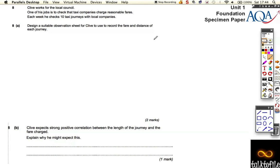So we've got a question about Clive now, and he's working for the local council, and he wants to check the cost of some taxi journeys to make sure that they charge a reasonable amount. Now, it asks for a suitable observation sheet. It's not actually very hard to get these marks, but you have to understand what an observation sheet is. It's basically a piece of paper which you've designed so Clive can record this information, the fare and the distance of each journey. And he's going to need 10 taxi journeys. So basically, it's just a table, an observation sheet, just a nice big table that he can use to put his information down.